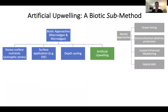Artificial upwelling should really be thought of as a sub-approach of biotic pathways, which fundamentally enhance production of macro or microalgae. Some take advantage of excess nutrients in the coastal zone; others rely on surface application of nutrients such as ocean iron fertilization. There are also emerging technologies that depth-cycle macroalgae below the nutricline and return them to the sunlit surface layer. Artificial upwelling pumps nutrient-rich deep ocean water to the surface to support biological production. There are also abiotic pathways that seek to enhance the ocean's alkalinity and its ability to store carbon.